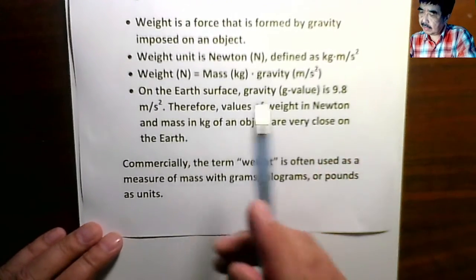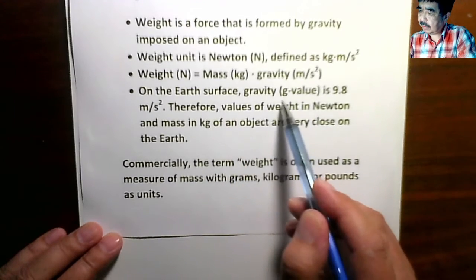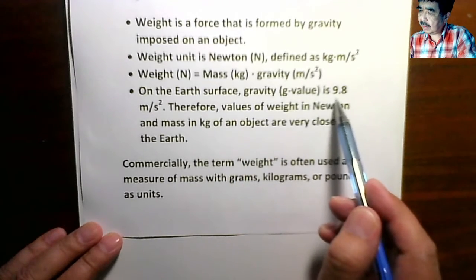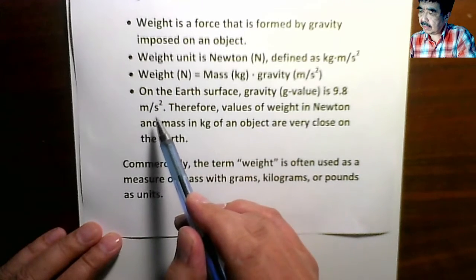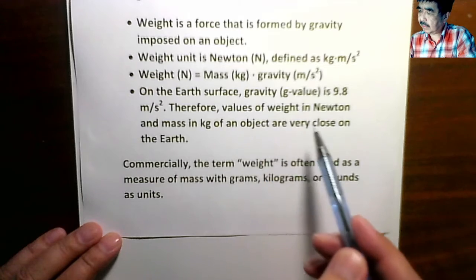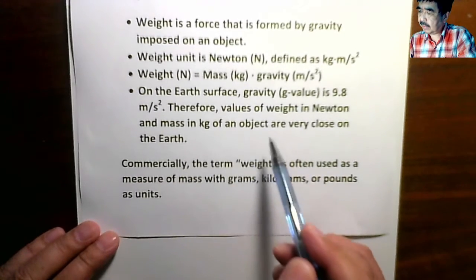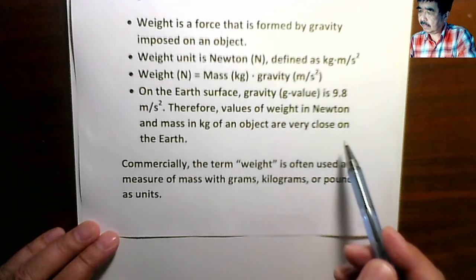Another point is, on the earth's surface gravity, also we call it g-value, is 9.8 meter per second square. Therefore, the values of weight in Newton and mass in kilogram of an object are very close.